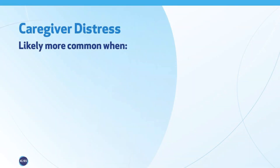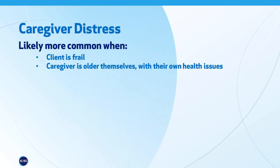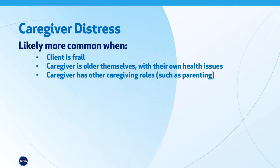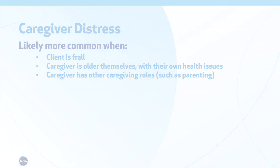The other aspect we looked at was caregiver distress, which is also important because the more frail an older client is, the more likely their caregiver helping in the home might have some kind of distress. This is particularly the case if the caregiver is a spouse who is also older and experiencing their own health issues, but also for a child or child-in-law who might have unique challenges caring for their own children, their own health, and the health of the parent.